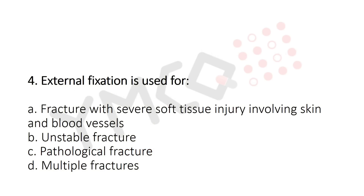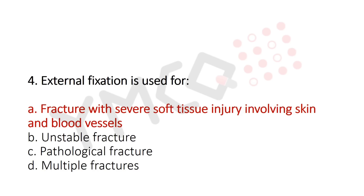Question 4: External fixation is used for — option A: fracture with severe soft tissue injury involving skin and blood vessels; option B: unstable fracture; option C: pathological fracture; option D: multiple fracture. The answer is option A: fracture with severe soft tissue injury involving skin and blood vessels.